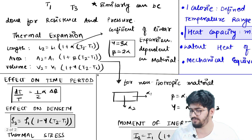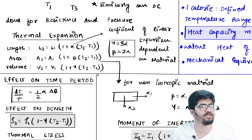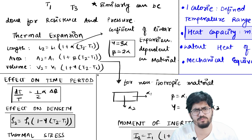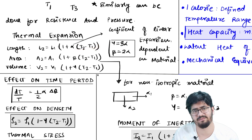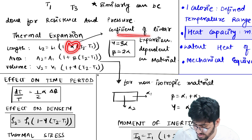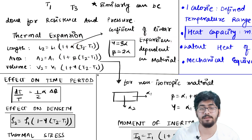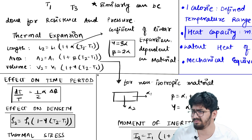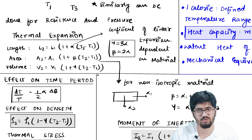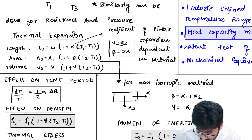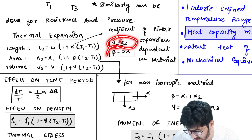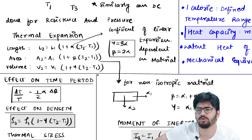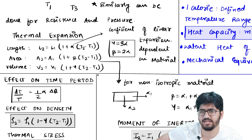Next, thermal expansion. If I heat a rod or string, the length will increase. So: L2 = L1(1 + α·ΔT), where ΔT = T2 - T1, and α is the coefficient of linear expansion, which depends on the material. L2 is the final length and L1 is the initial length. Similarly, A2 = A1(1 + β·ΔT) for area, and V2 = V1(1 + γ·ΔT) for volume. The general relations are: γ = 3α and β = 2α.